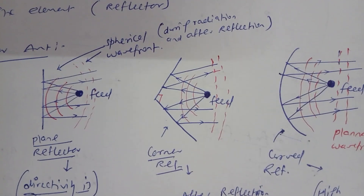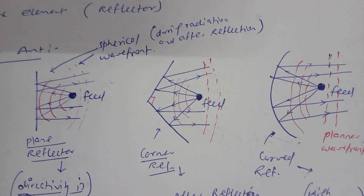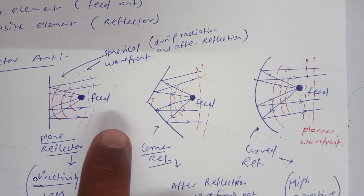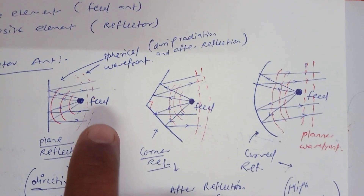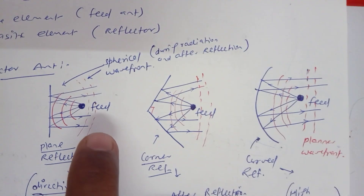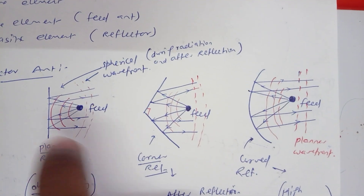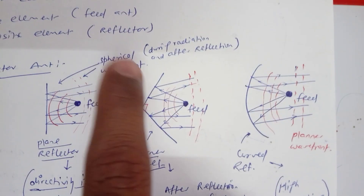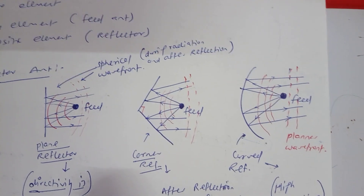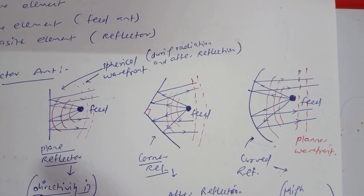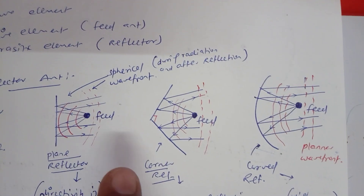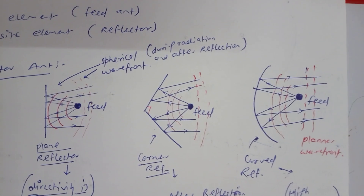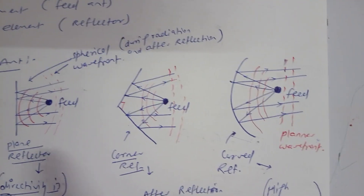In the case of the planar reflector antenna, we have a feeding point and a plane reflector. The signal coming from the feeding antenna reflects and produces a spherical wavefront. Since we are not converting this spherical wavefront into a planar wavefront, the plane reflector has less directivity.